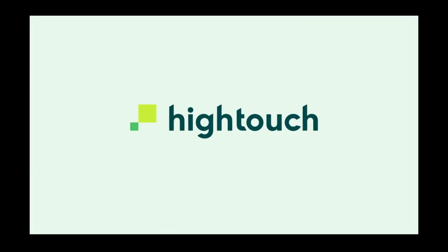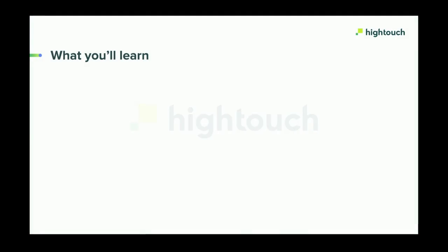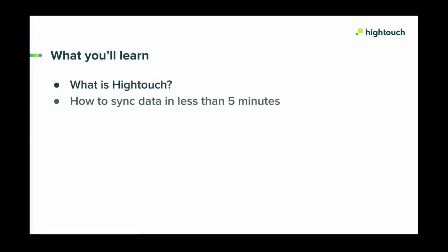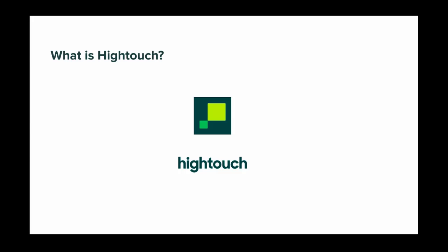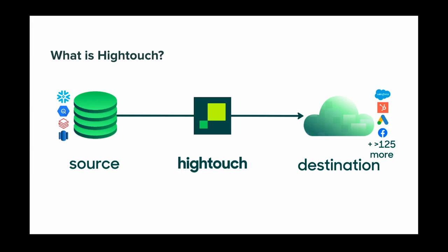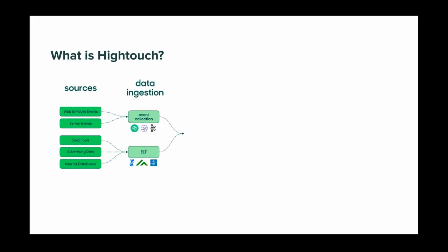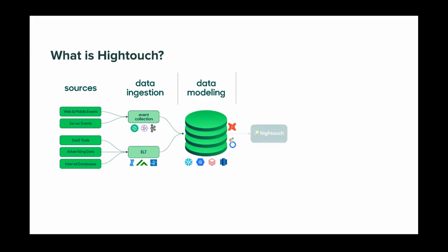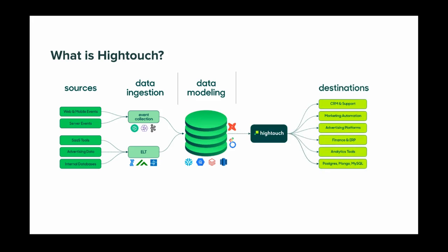HiTouch is the easiest way to sync data from your data warehouse into business applications. HiTouch is a data activation platform that makes it easy to sync data from your data warehouse, spreadsheets, or other sources into over 125 business applications and developer tools. While event collection and ELT platforms push data into your warehouse, HiTouch pulls it out and syncs it to the SaaS platforms and tools your organization relies on. You can think of this process as reverse ETL.